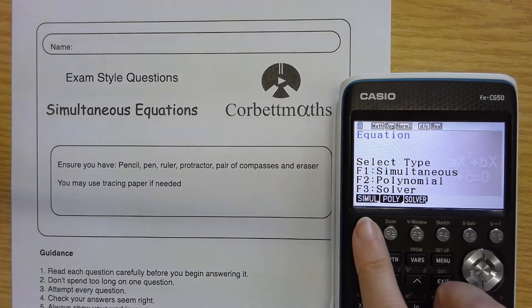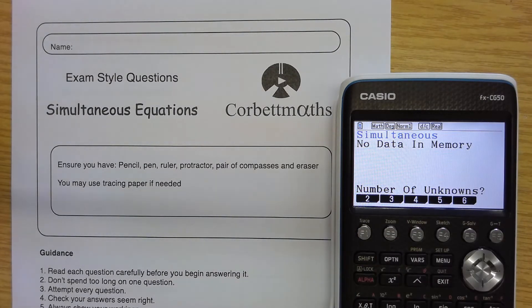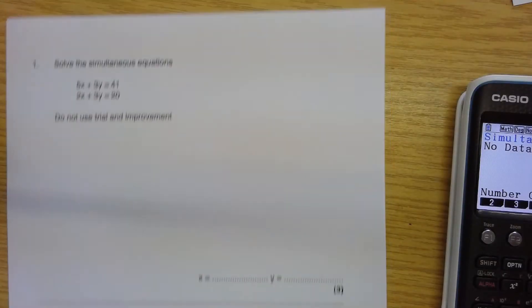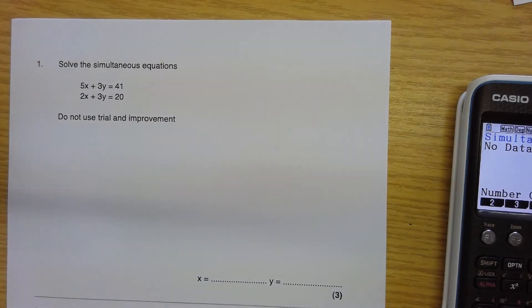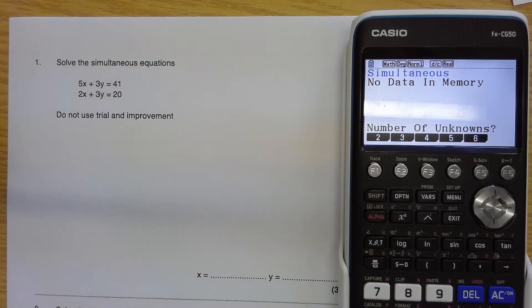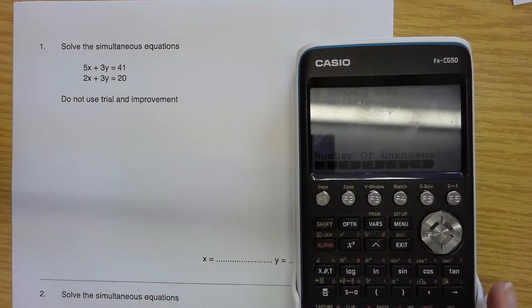So if I push F1, that's simultaneous. There's no data in the memory at the moment. That's fine. Number of unknowns. You can deal with anything up to 6 unknowns, which once again, very handy the further you go with mathematics. Generally in GCSE, we only deal with 2. So let's have a look. Let's open my booklet. So on the very first question, it says, do not use trial and improvement. And once again, what this calculator will do is it will give me the final answer so I can check my answers are correct. It does not secure any method marks in showing processes.